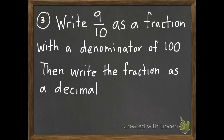Number three: write nine tenths as a fraction with a denominator of one hundred, then write the fraction as a decimal. Number four: write one tenth as a fraction with a denominator of one hundred, then write the fraction as a decimal.